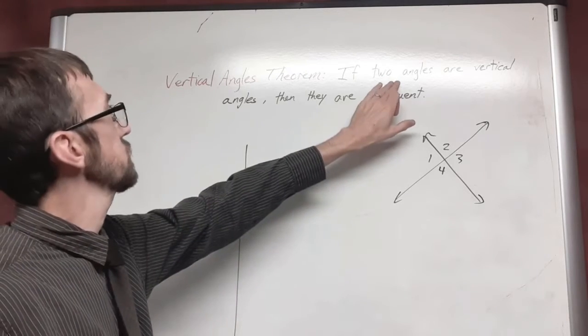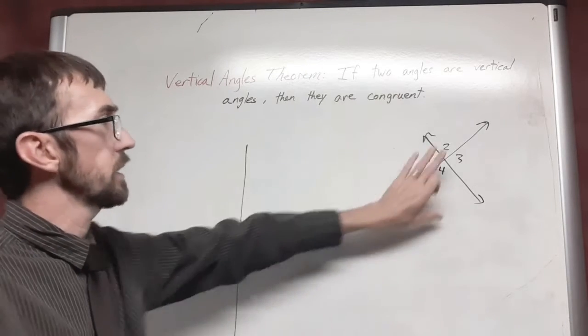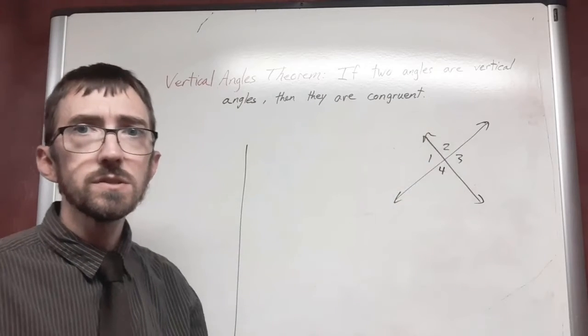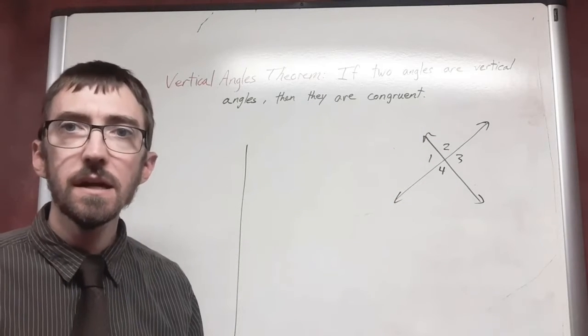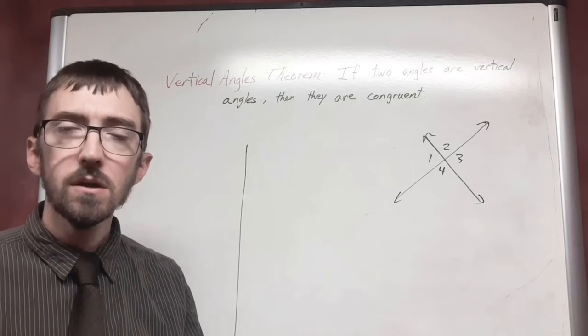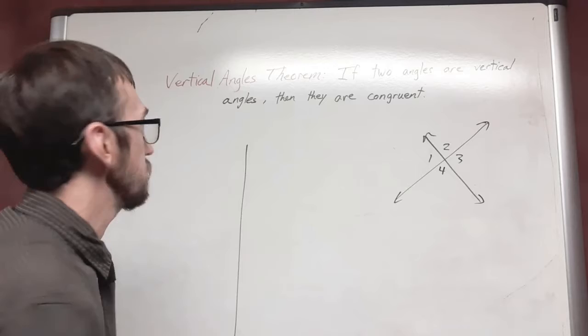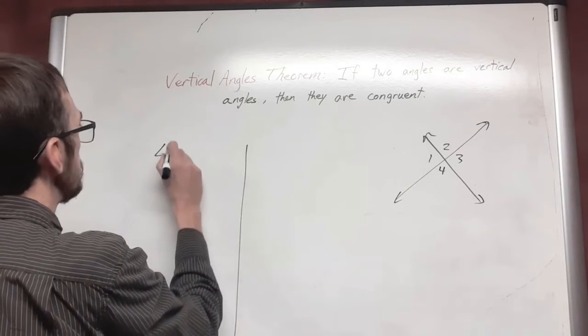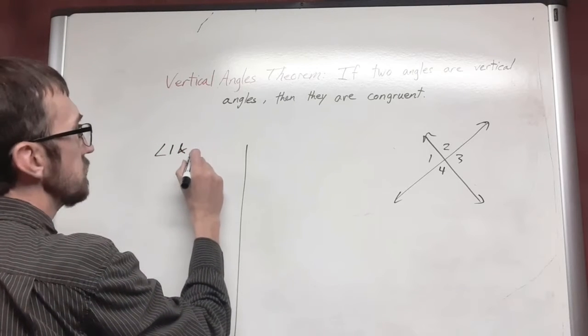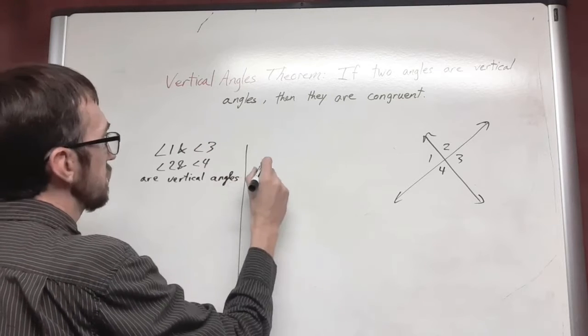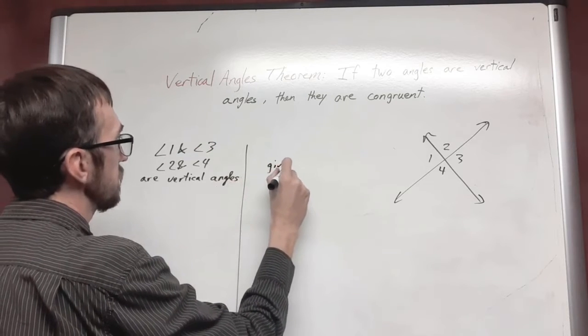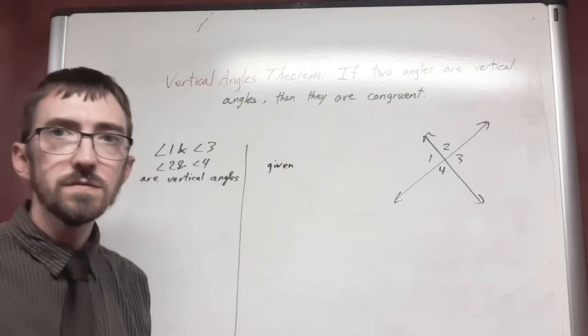So I have two angles are vertical angles. So I have essentially this diagram. I want to state that angles one and three are vertical angles, and that two and four are vertical angles. These are my givens.